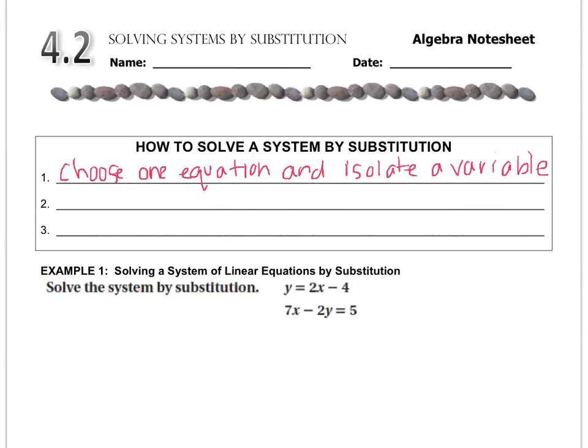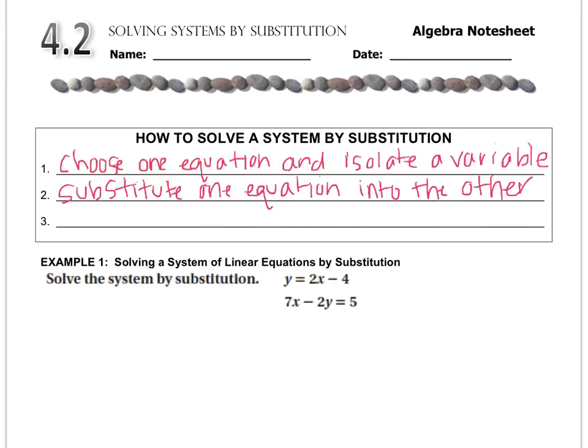You can pick either the x to get alone or the y. Either way, you're still going to be able to use this technique, and sometimes solving for y is going to be faster, and sometimes solving for x is going to be faster or better. The second step is to substitute one equation into the other. And the third step is to solve and find both variables.